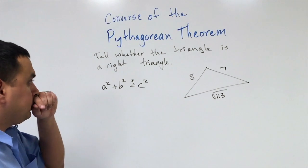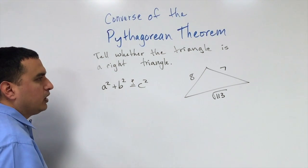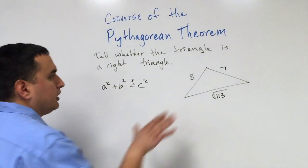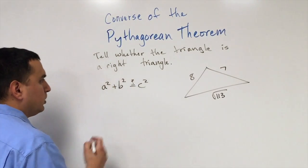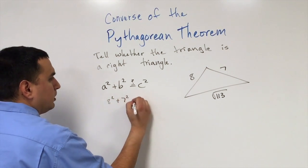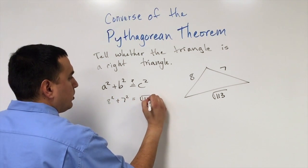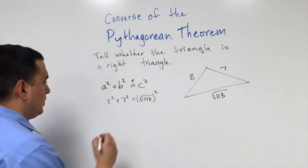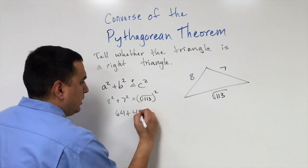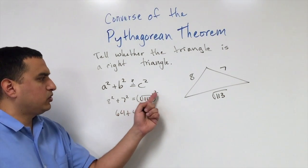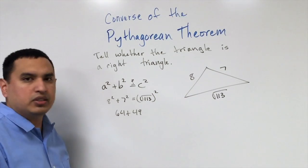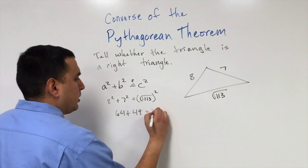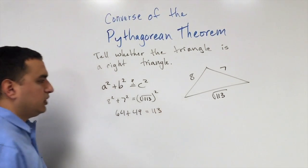Here's an example. We're going to use our longest side as our c, and the other two will be our a's and b's. So we have 8 squared plus 7 squared equal to the square root of 113 squared. 8 times 8 is 64, 7 times 7 is 49. Now here's where the square and the square root, they're opposite operations, so they cancel each other out. So when I square a square root, I just get whatever number is inside. So that's 113.